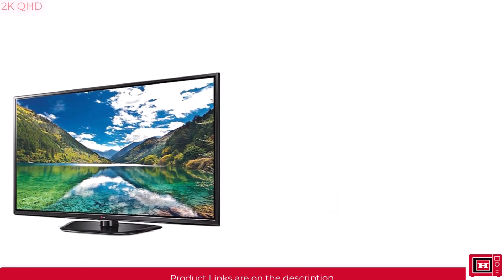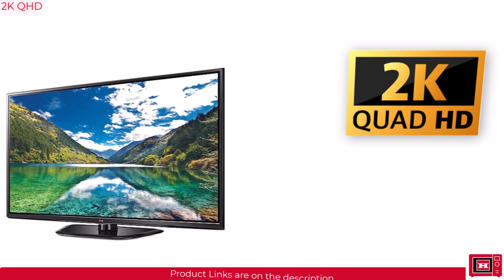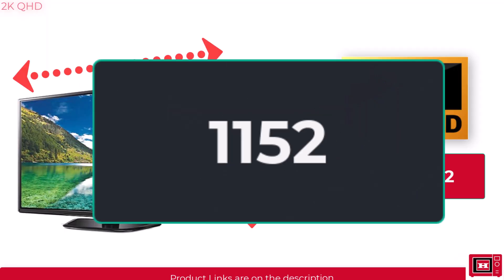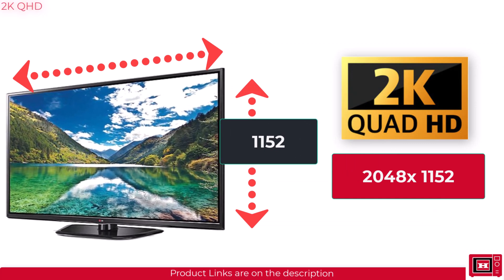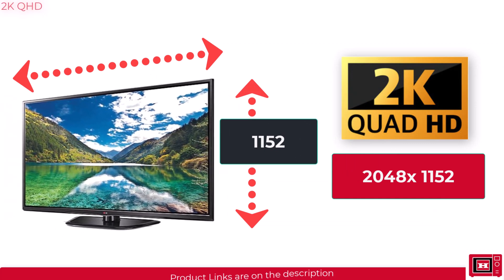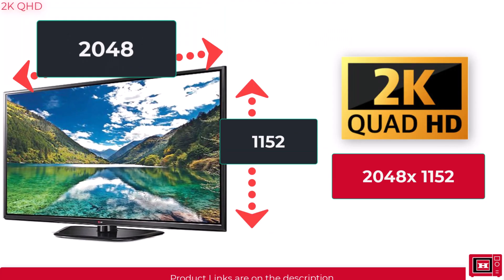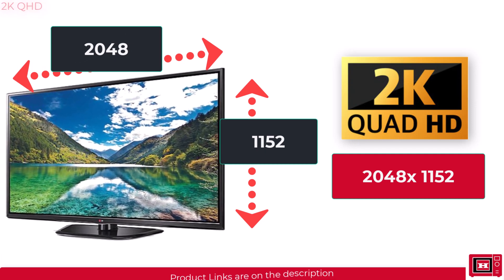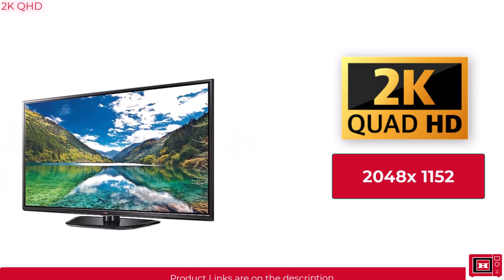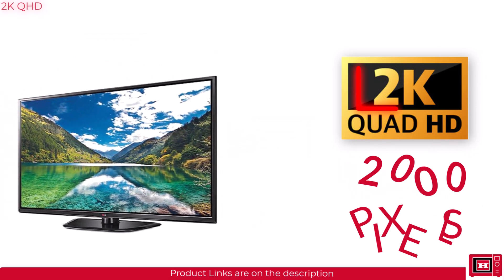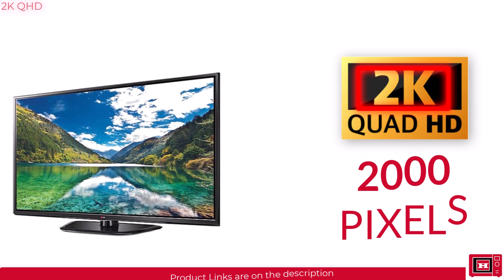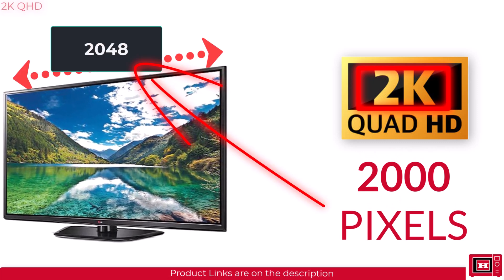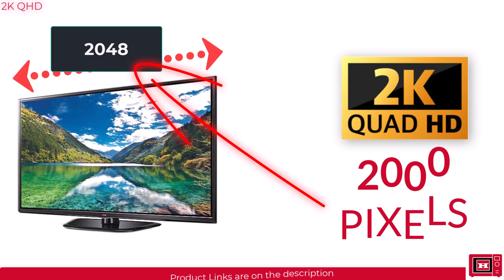When you see QHD or 2K on a TV product, it means the display has a total of 1152 pixels arranged vertically and 2048 pixels arranged horizontally on the screen. The term 2K means 2000 pixels, which is the approximate number of pixels on the horizontal side of the screen.